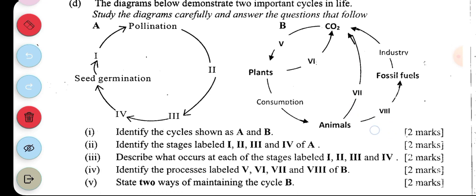Now the last part of these practical questions. This diagram demonstrates two important cycles in life. Study the diagrams carefully and answer the questions that follow. It says identify the cycles shown A and B. Now you need to really think through before you can identify this pollination, seed germination.